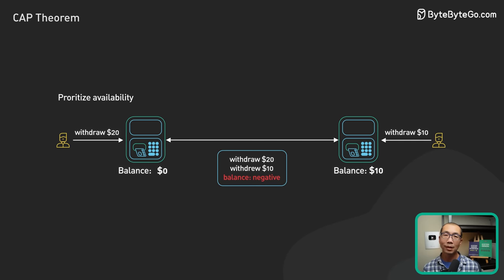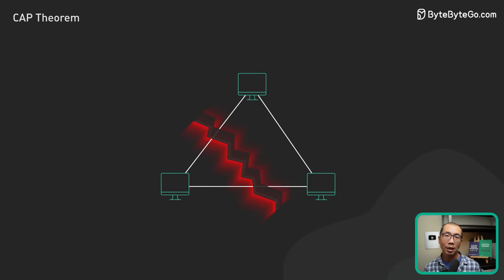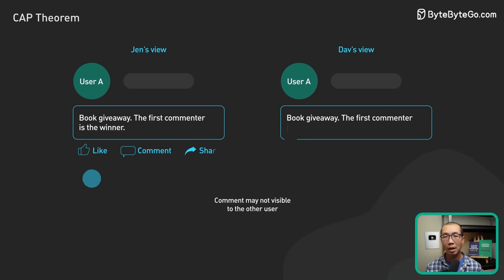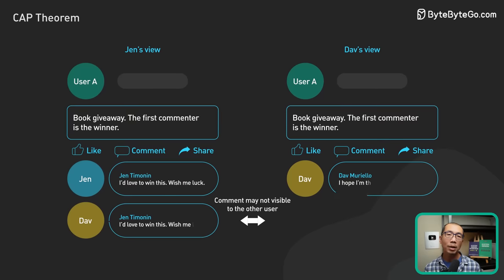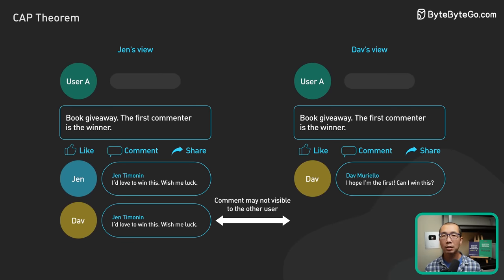Now let's go through another example and see how a social media platform could apply the CAP theorem. During a network partition, if two users are commenting on the same post at the same time, one user's comment may not be visible to the other users until the partition is resolved.